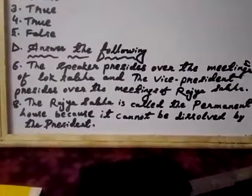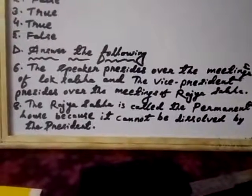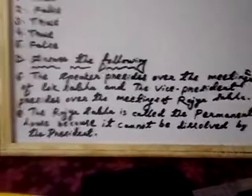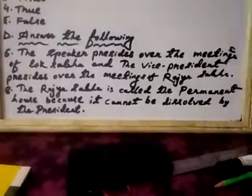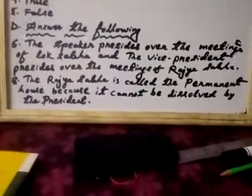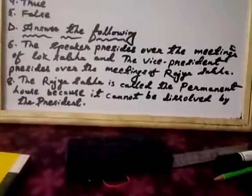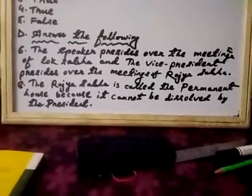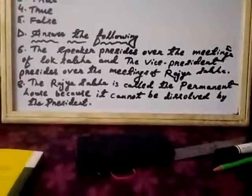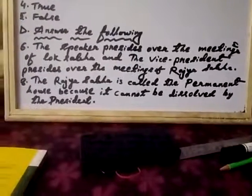Number eight — which house of the parliament is called the permanent house and why? The Rajya Sabha is the permanent house because it cannot be dissolved by the president.